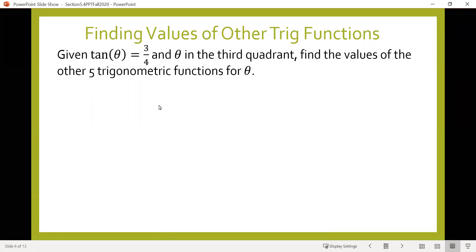Let's look at this problem. We're given that the tangent of some angle theta equals three-fourths, and theta is in the third quadrant. We're asked to find the values of the other five trigonometric functions for theta: sine, cosine, cosecant, secant, and cotangent.